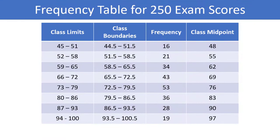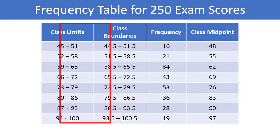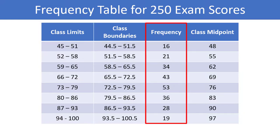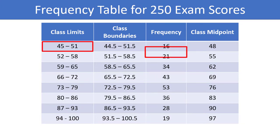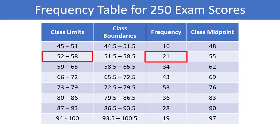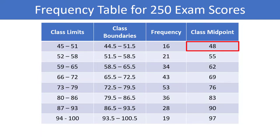Here is what a frequency table looks like for our exam score data. We have split up the data into classes or groups and counted how many data points fall into each group. For example, there are 16 individuals who scored between 45 and 51 on the exam, 21 who scored between 52 and 58, and so on. The class midpoint is just the value in the middle of each class and serves as a single representative number of the values inside the class.